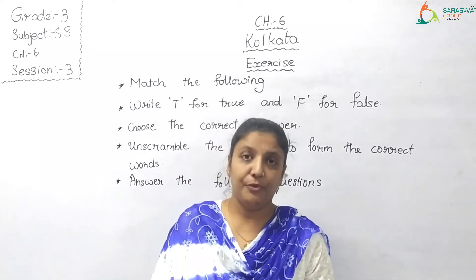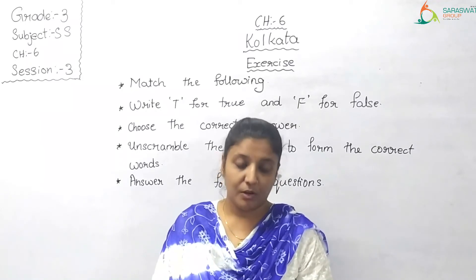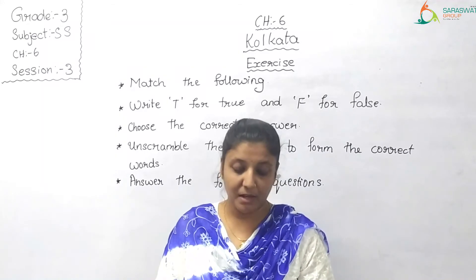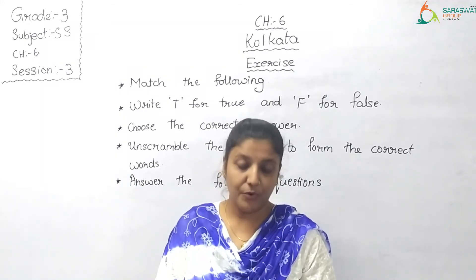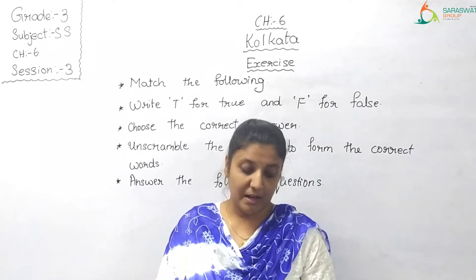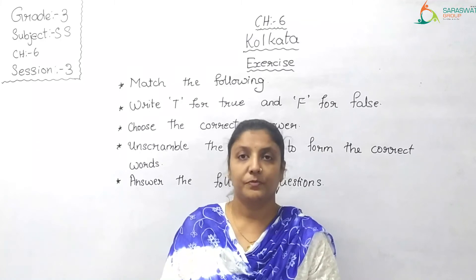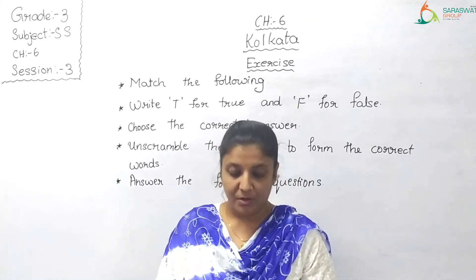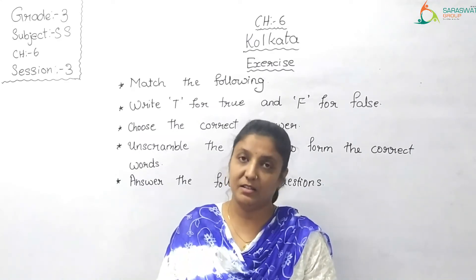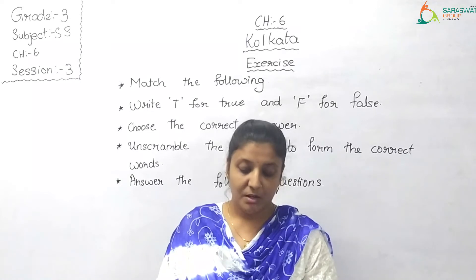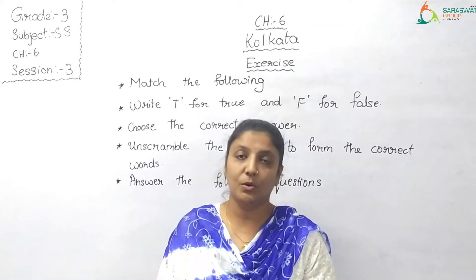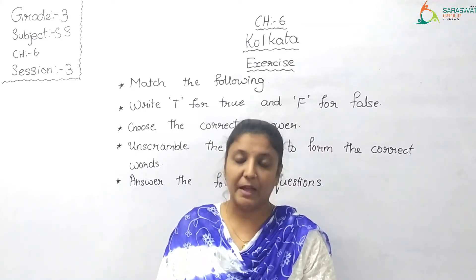Let me read Column A for you: A. Kolkata, B. Bengali, C. Fort William, D. Botanical Gardens, E. Sandesh. Now Column B: 1. Built by the British, 2. A Bengali sweet, 3. Capital of West Bengal, 4. Main language spoken in Kolkata, 5. Great Banyan Tree.